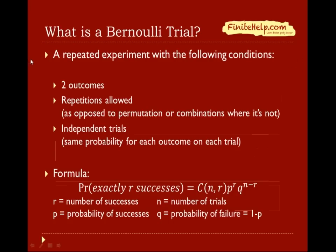A Bernoulli trial is a random process which consists of a repeated experiment with the following conditions. First, there have to be only two outcomes. You have to allow repetition, as opposed to permutation or combination where you do not allow repetition. And these trials have to be independent trials, meaning the same probability for each outcome on each of the trials.